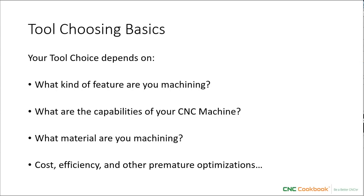Factor number one — what kind of feature are you machining — is the most important because it's going to determine the general category and perhaps also the size of tool you'll use. Questions two and three will limit the overall choices further to more specific tools. Factor number four deals with cost, efficiency, and similar considerations. I'm going to suggest right now that you leave it aside as a beginner because it's a premature optimization. You're not ready to delve into all those tradeoffs and special tricks, and you don't need all that. You're just trying to make your first few parts as quickly and easily as possible. So let's go ahead and dive into these things one by one.